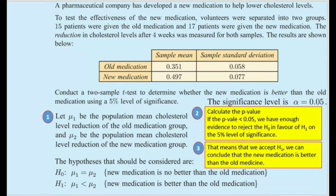Let's look at an example to understand the two-sample t-test. A pharmaceutical company has developed a new medication to help lower cholesterol levels. To test the effectiveness of the new medication, volunteers are separated into two groups.